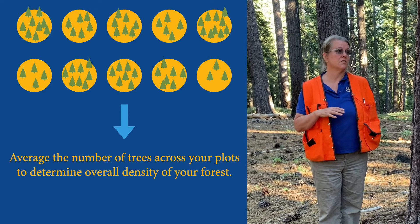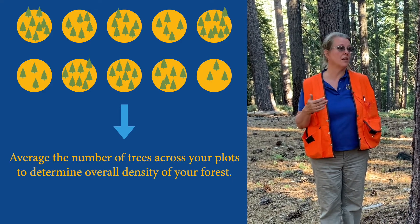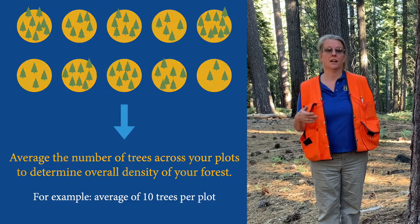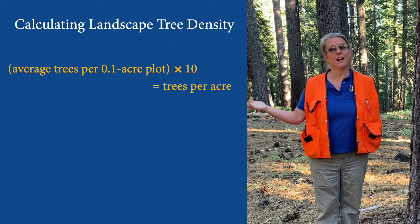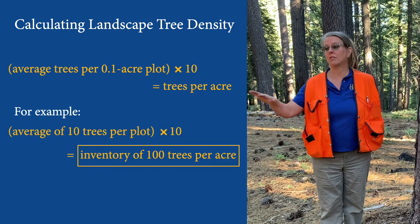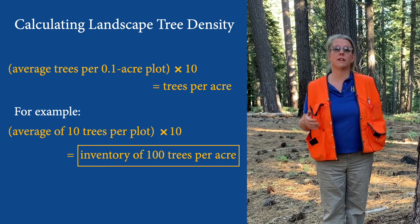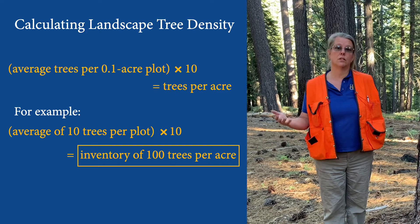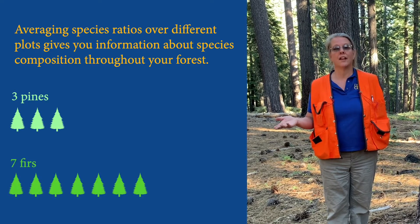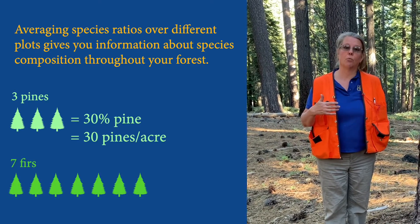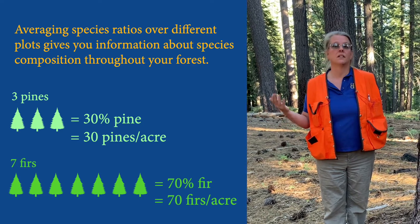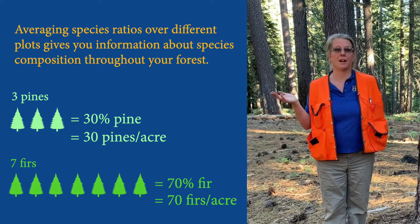What I'm going to do is average the trees found across that area. So let's say some plots had 12 trees, some had 20, some had only four — and my average number of trees per plot was 10. I had a tenth-of-an-acre plot and got an average of 10, so in one acre I have an average of 100 trees. If that's my average across the landscape, those plots represent an inventory of 100 trees per acre. With the same proportion of three pines and seven firs, 30% of the inventory — 30 trees per acre — is pine, and 70% — 70 trees per acre — is fir.